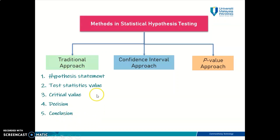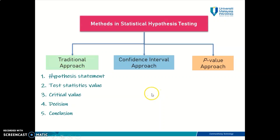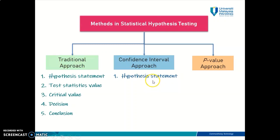So those are the five steps of doing hypothesis testing using the traditional approach. In the confidence interval approach, you will have similar steps, but a little bit different. There are only four steps. The first one is very much similar — you need to construct your hypothesis statement. From your claim, you need to come up with H-null and also H1, exactly the same as in the traditional approach.